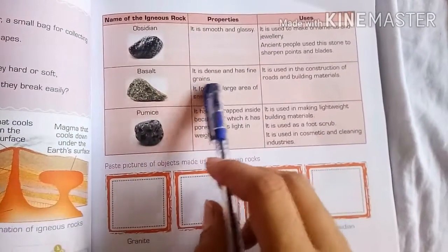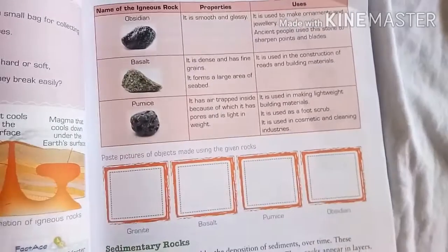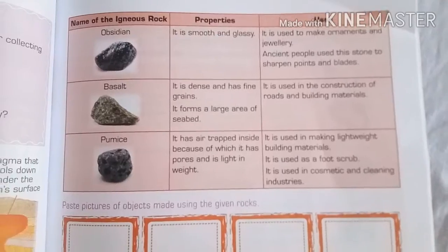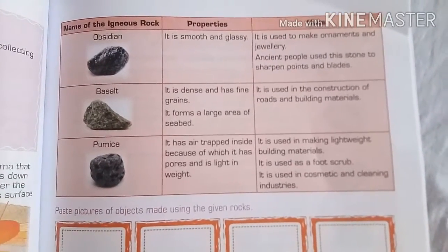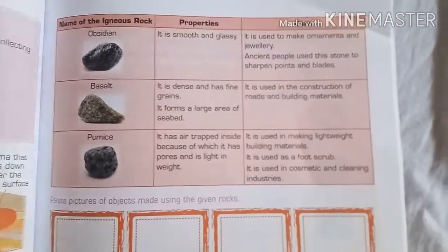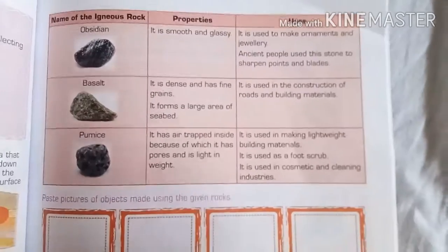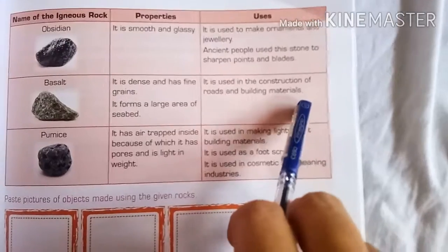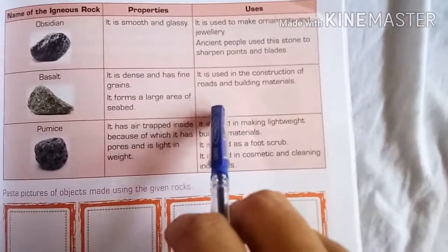Basalt is dense and has fine grains. It forms a large area of the seabed. It is used in the construction of roads and as building material.